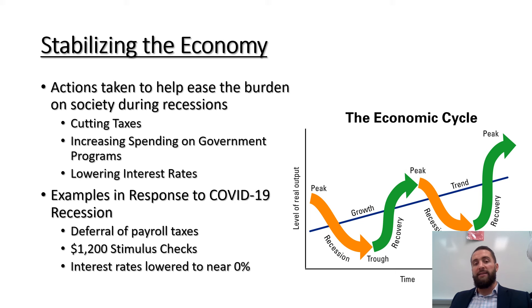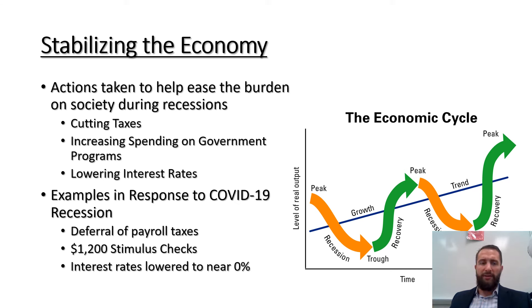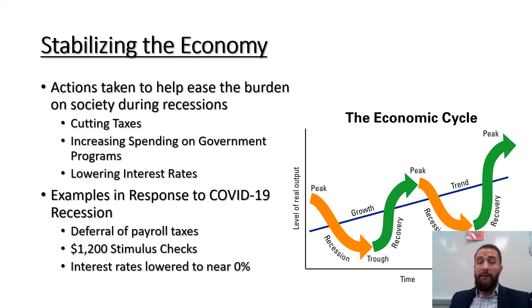Finally, lowering interest rates — this refers to how easy it is to borrow money from banks. The government can influence this through the actions taken by the Federal Reserve, which you will learn about later in this class. Right now our interest rates are almost at zero percent, so if you want to borrow money to make a big purchase like a house, a car, or a boat, now is a pretty good time because you'll be charged much less in interest. Those are the six economic functions of government. Thank you for watching, and please feel free to message me if you have any questions.